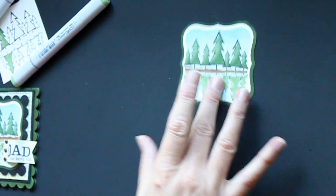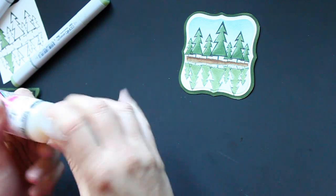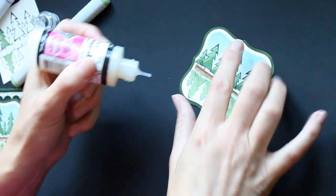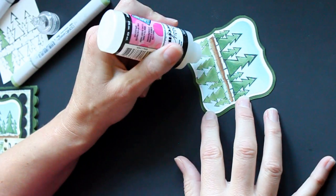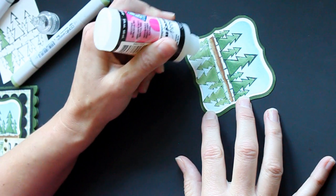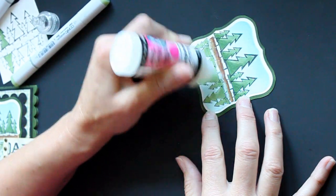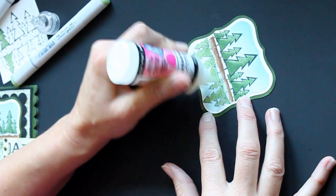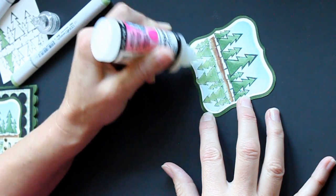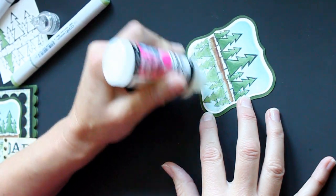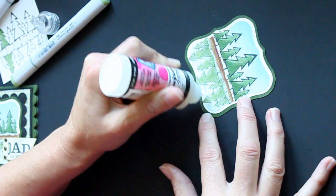And then what you can do, it's optional, you can add a little bit of glossy accent or crystal effect over your reflective area to give it the gloss of water or the shine.